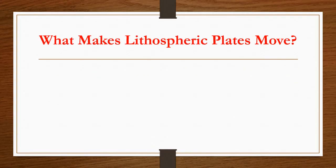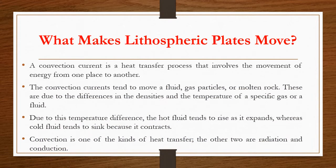So what makes lithospheric plates move? What is the factor or reason for how the plates move? A convection current is a heat transfer process that involves the movement of energy from one place to another. Convection is a kind of heat transfer from one place to another. The others are radiation and conduction.